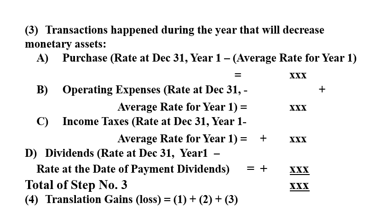The total of step three is to add items a plus b plus c plus d. The result is the translation gain or loss.